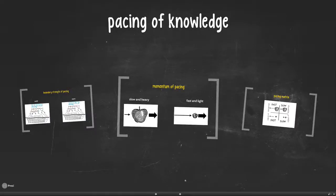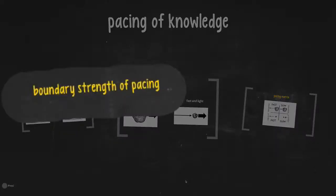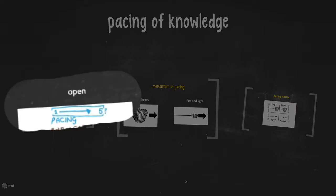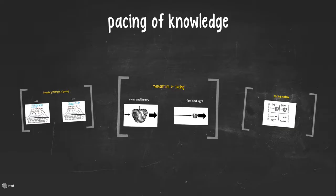The sixth question we ask ourselves when doing educational analysis has to do with the pacing of knowledge. Again, make a split on the one side between the boundary strength of pacing. Is it solid, in which case there's a very clear and definite pace set, or is it open, in which case you're far more flexible about how the lesson actually goes in terms of its speed?